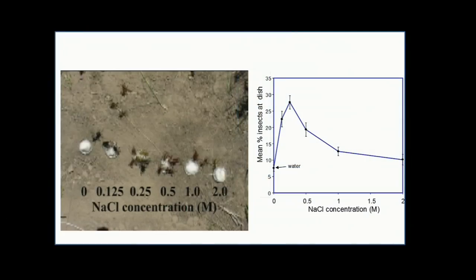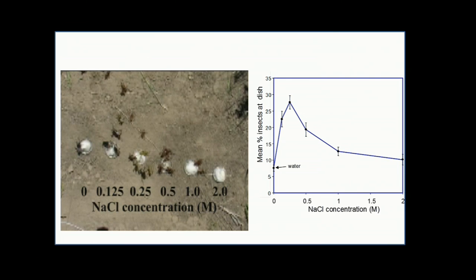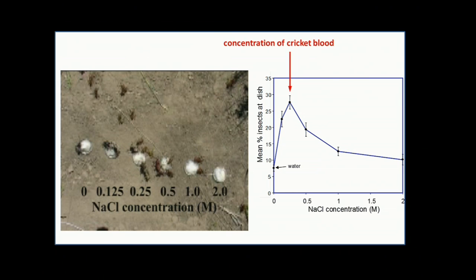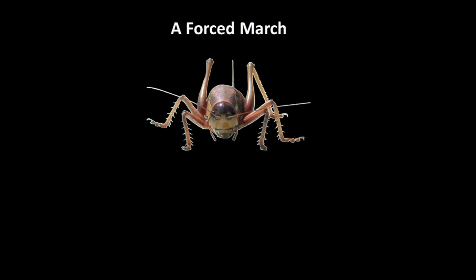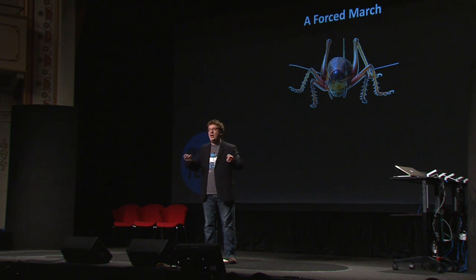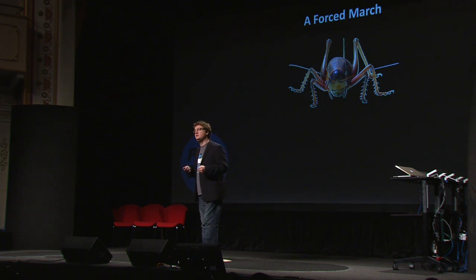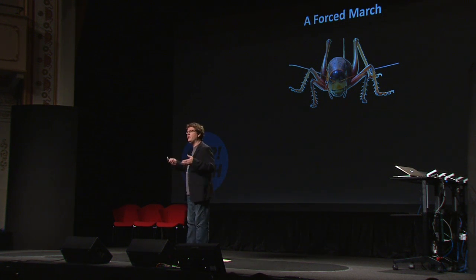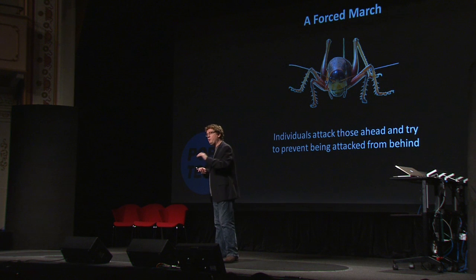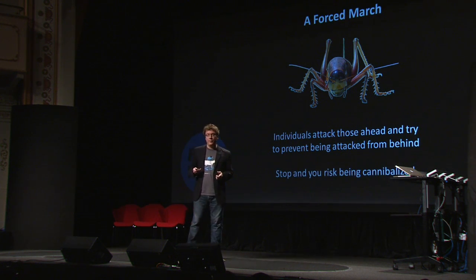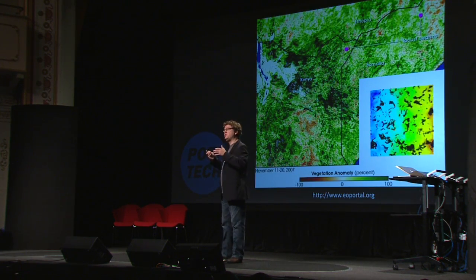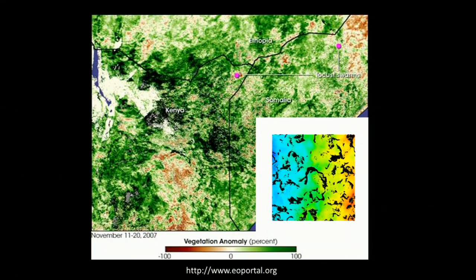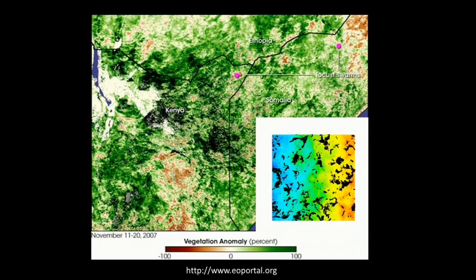This is sort of a living histogram. You can see them chowing down on different salt concentrations, and 0.25 is the one they love — they're fighting each other over it. That turns out to be the concentration of their blood. What we discovered with locusts and crickets is that it's not cooperative. These are cannibalistic insects on a forced march. They run out of protein, they run out of salt, and they turn on each other. Stop and you risk being cannibalized. Individuals are attacking those ahead and trying to avoid being attacked from behind, and the outcome is collective motion. We're now developing computer simulations and using satellite data to understand where and when protein will be limited in an environment, so we can predict locust outbreaks.